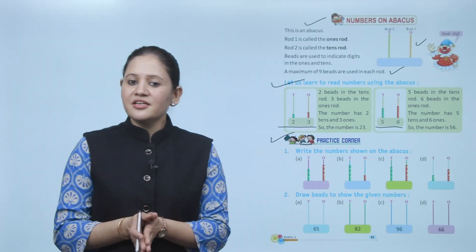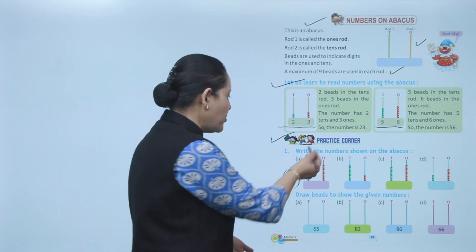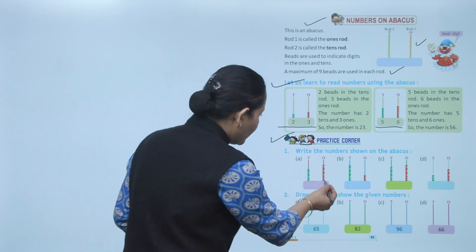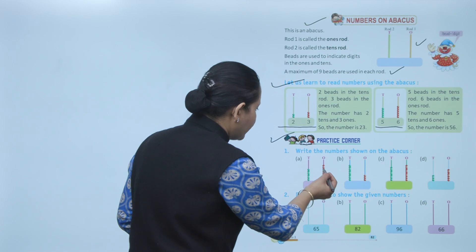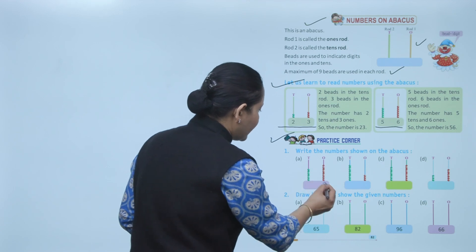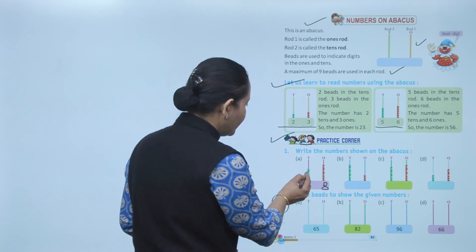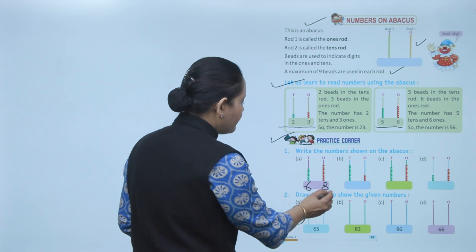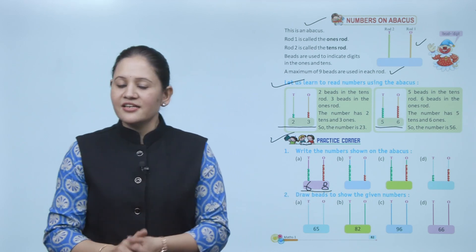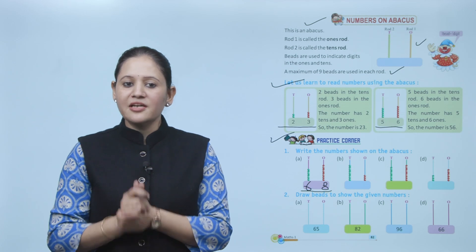Now, write the number shown on the abacus. How many beads in the ones place? 1, 2, 3, 4, 5, 6, 7, 8 — so write 8 in ones place. In the tens place: 1, 2, 3, 4, 5, 6 — so our number is 68. Like this, count the beads and accordingly write the number.